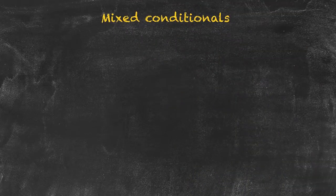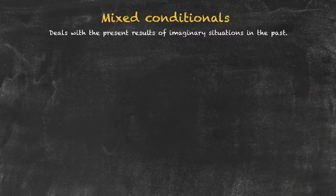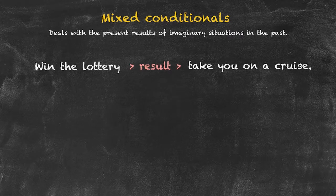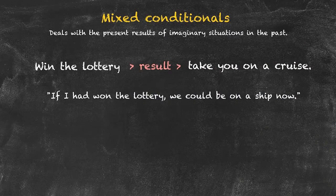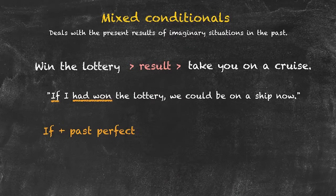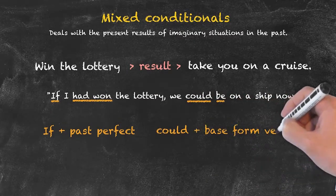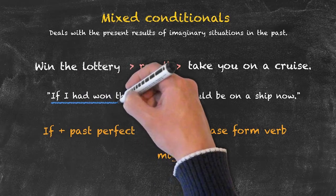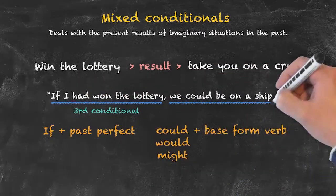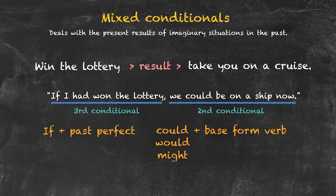The final conditional we're going to look at in this unit is called the mixed conditional. This conditional deals with the present results of imaginary situations in the past. So the imaginary situation of winning the lottery in the past — the present result might be that we are on a cruise ship now: 'if I had won the lottery, we could be on a ship now.' The structure is: if + past perfect, followed by could/would/might + the base form. The first clause is a third conditional and the second clause is the same as the second conditional — that is why it's called the mixed conditional.